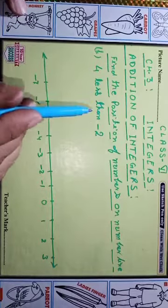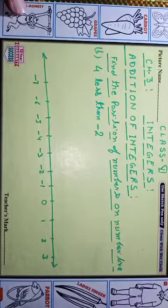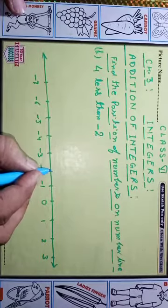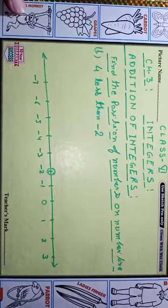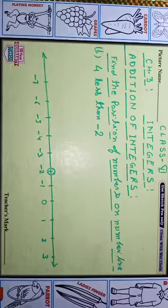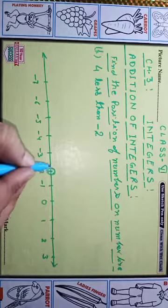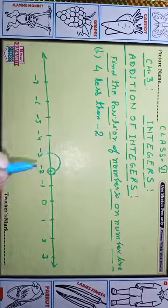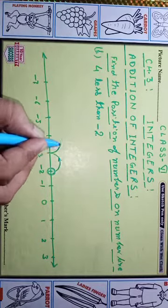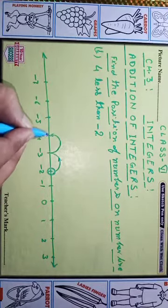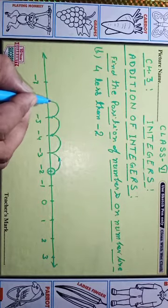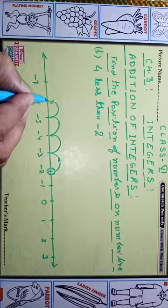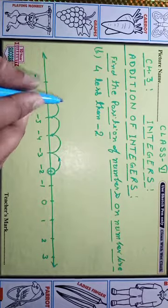Next is part b: four less than minus two. Four less than means we go to the left side. Minus two is at this place on the number line. Four less means we go to the left side, four steps. First step, second step, third step.